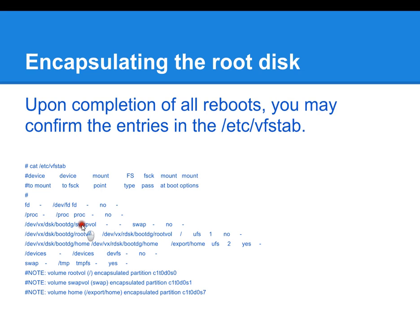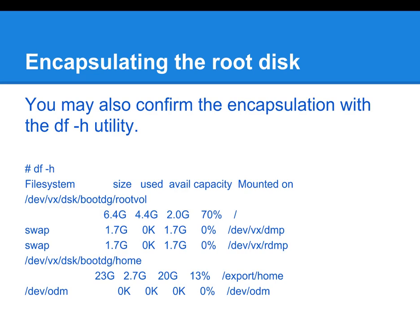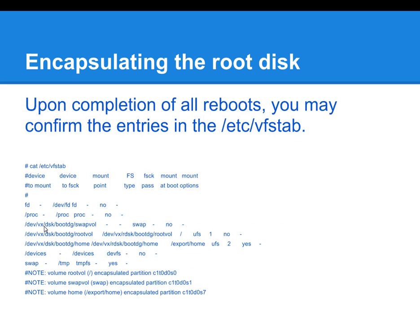We can see that swap vol, root vol, and home are all in /etc/vfstab. These are all volumes or subdirectories that were on the original root disk before we encapsulated it. Now you can see that they actually have the Veritas wrappers on them.